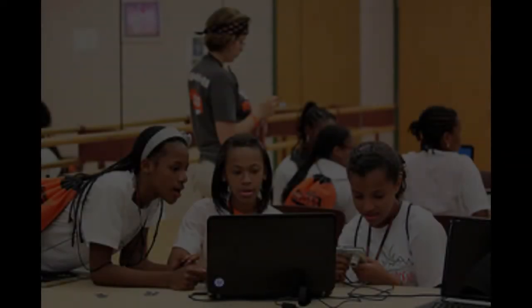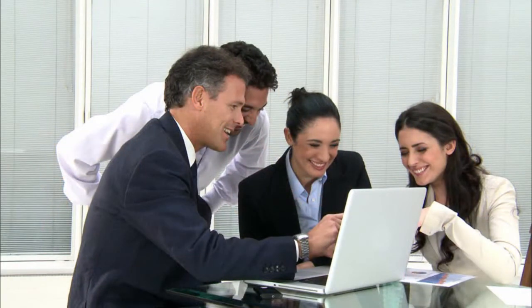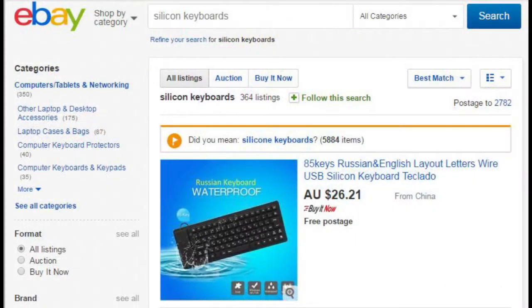Obtaining the components necessary to complete the section on sharing devices between multiple students: the section of the course on sharing devices between multiple students, to allow up to four children to collaborate on one device, requires that a group of between two and four teachers work together to experiment with connecting multiple keyboards and mice to a single device. Your school will need to purchase one set of 3 USB wired silicon keyboards, 3 USB wired mice, and 1 USB 7-port hub, at a total cost of approximately $50. The easiest way to purchase these is on eBay.